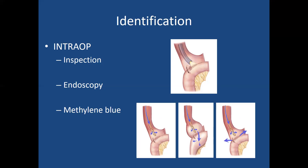Early on, my favorite way of proving the anastomosis was technically complete was by passing an NG tube into the pouch, inflating the pouch with methylene blue and saline, and distending the pouch and Roux limb, which was occluded distally. This proved both the patency of the anastomosis and the absence of a leak or technical failure.